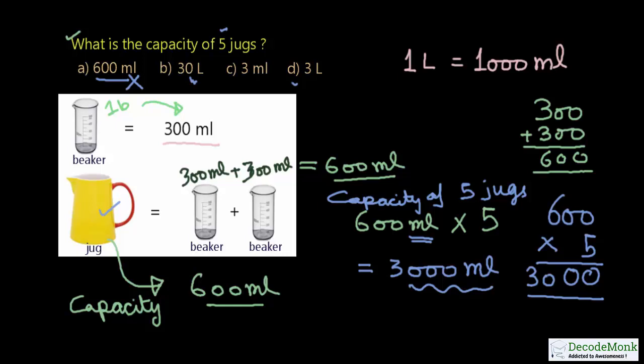We have two options, B and D, with liters as the unit, and option C with milliliters. Option C is 3 milliliters, but our answer is 3000 milliliters, so C is not correct.